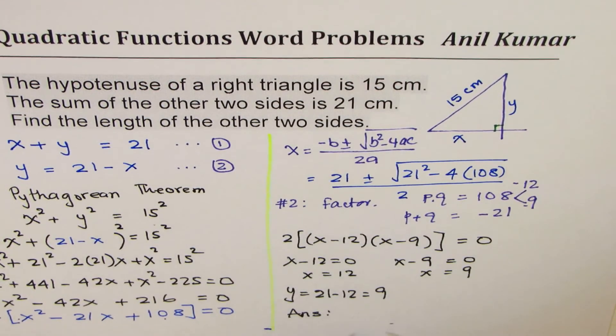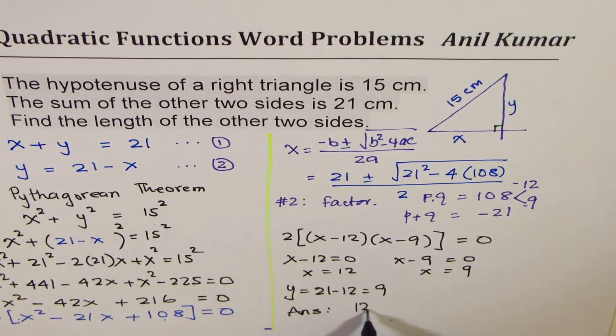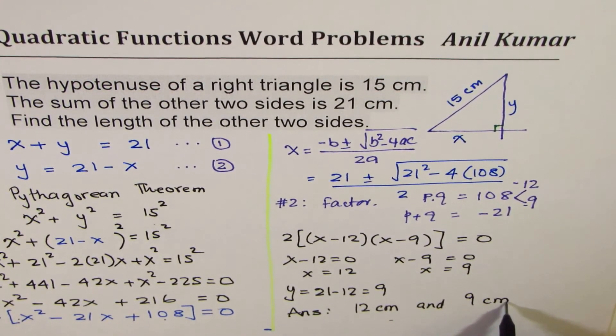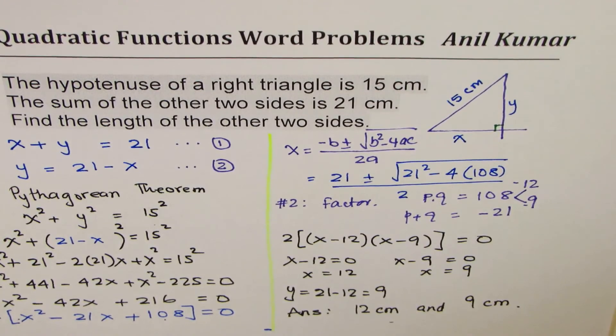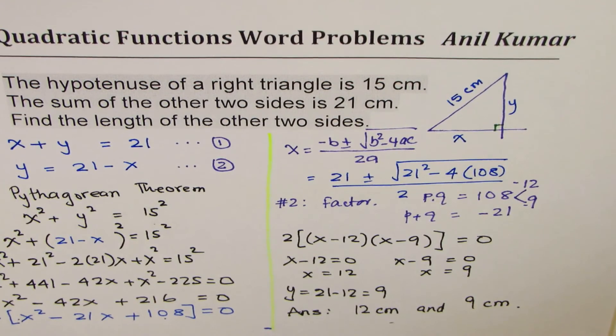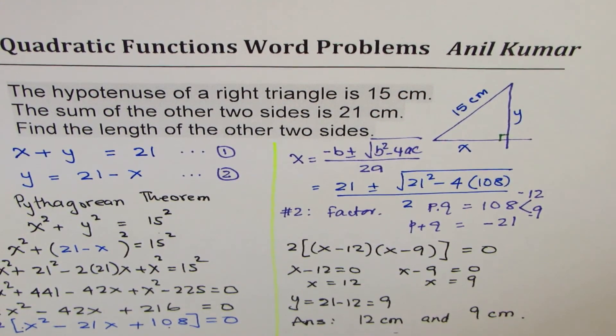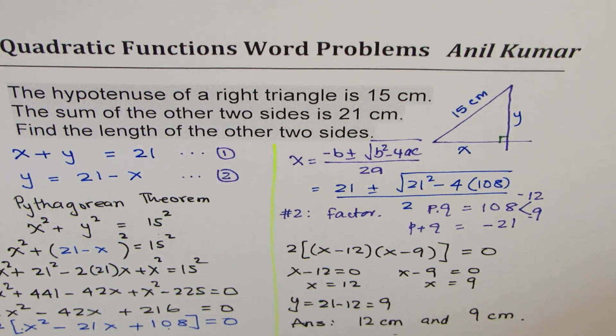So we get our answer: the two sides are—don't forget to write units—12 centimeters and 9 centimeters. In this video, you learned two different ways of solving such questions. Also remember, when you write your answers in any word problem, you have to include units. I hope you appreciate it. Feel free to write your comments, and if you like and share, that'd be great. Thanks and all the best.